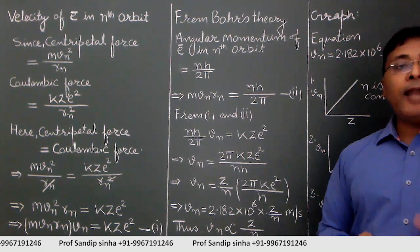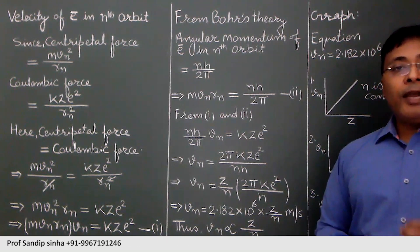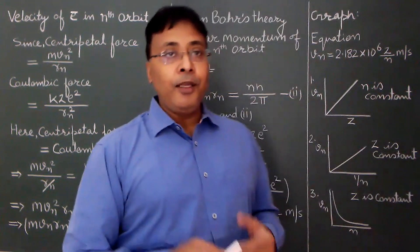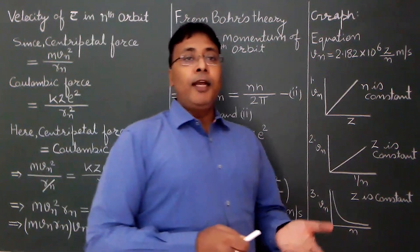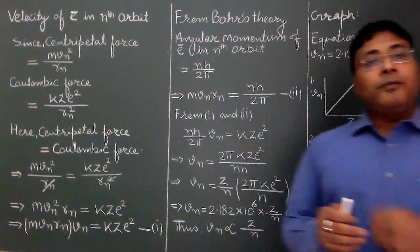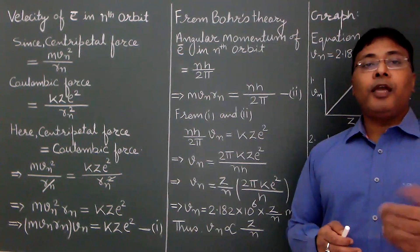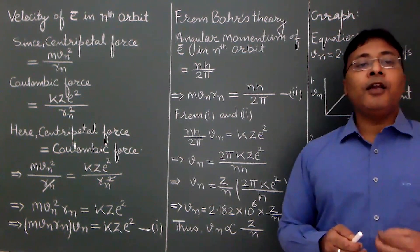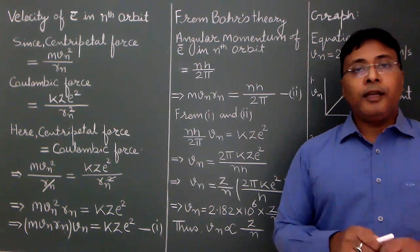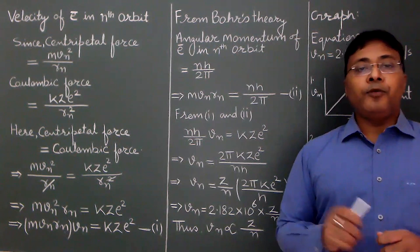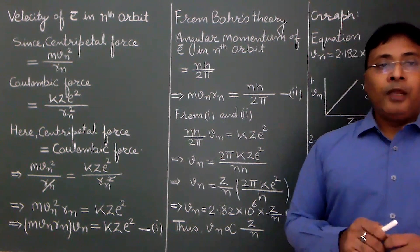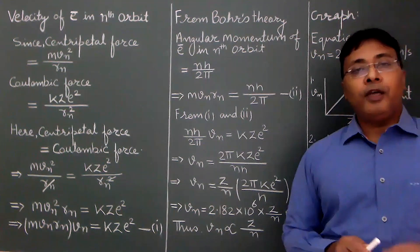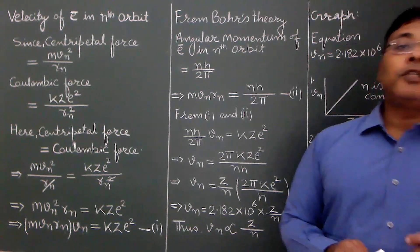When the atom varies, z varies — for hydrogen z=1, for He⁺ z=2, for Li²⁺ z=3, for Be³⁺ z=4. When the orbit varies for the same atom, n changes: first orbit n=1, second orbit n=2, and so on. Overall we conclude: velocity of electron in nth orbit is directly proportional to z and inversely proportional to n. The numerical value to remember is: vn = 2.182 × 10⁶ × (z/n) meter per second.